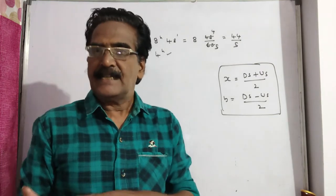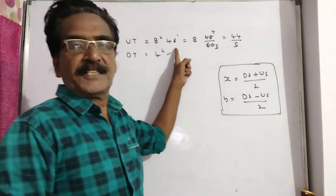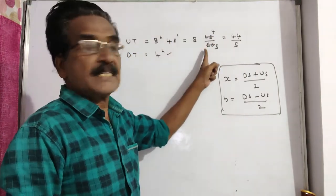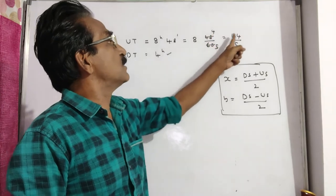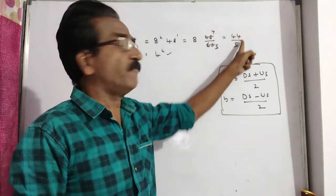The ratio of boat and current, that is the stream. The upstream time is 8 hours 48 minutes, which equals 8 + 48/60 hours. Simplifying: 5×8 = 40, 40+4 = 44, so 44/5 hours. This is the upstream time.